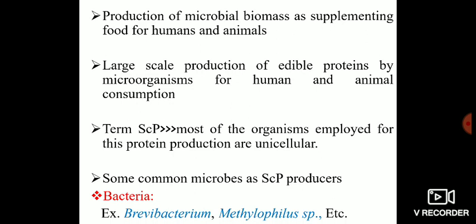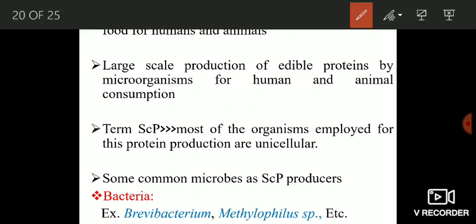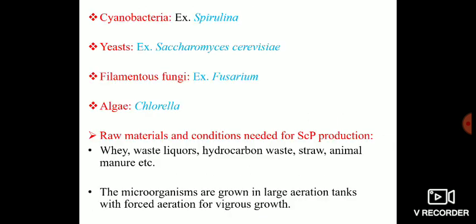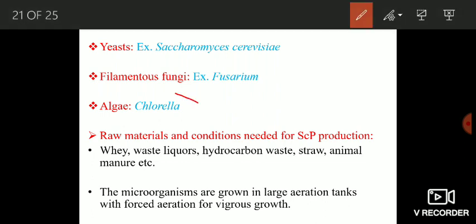Some of the common microbes used as single cell protein producers include bacteria — examples are Brevibacterium and Methylophila species. Among cyanobacteria, Spirulina is commonly used. Among yeasts, Saccharomyces cerevisiae is used for SCP production. Among filamentous fungi, Fusarium is commonly used, and among algae, Chlorella is the most common single cell protein producer.